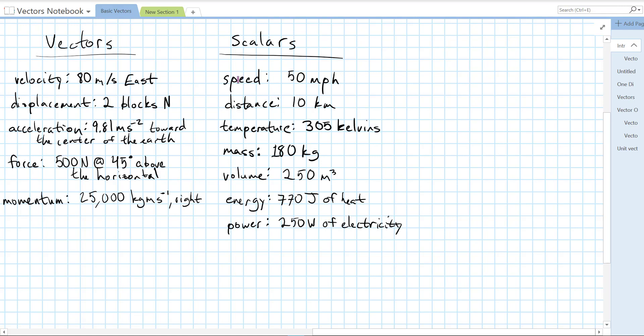So if you're on the highway, you see a speed limit of 50 miles an hour. That tells you how fast you're going to go. Speed is a scalar number. However, if you say 80 meters per second east, that's a velocity, that is a vector.